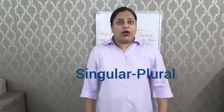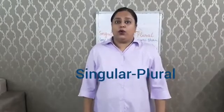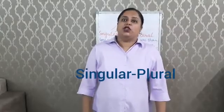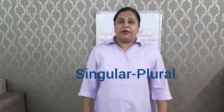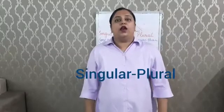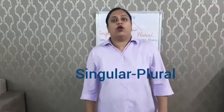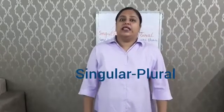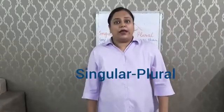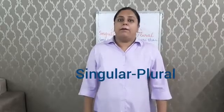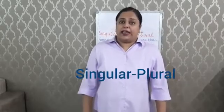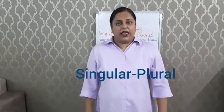I am sure kids that you all must know that when we talk about a person, place, animal, or thing, we also talk about their number. There can be one or more than one person, place, animal, or thing.